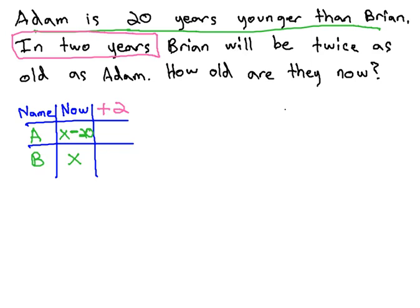What we will do then is we will add 2 to each of the now cells to fill in the plus 2 cells. Adam is x minus 20 plus 2. When we combine like terms, minus 20 plus 2 is minus 18. When we add 2 to Brian, they are not like terms. We simply have x plus 2.